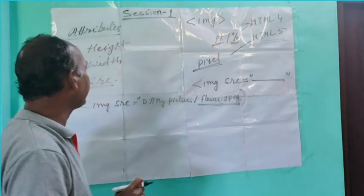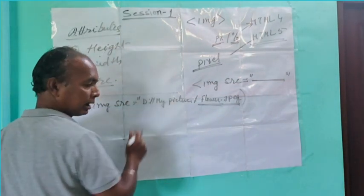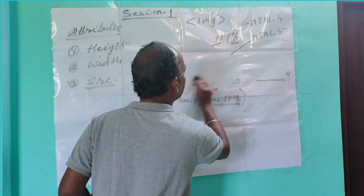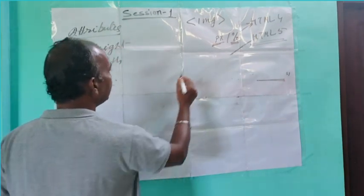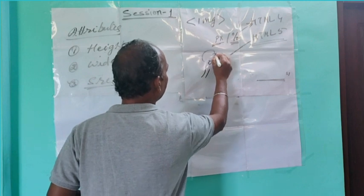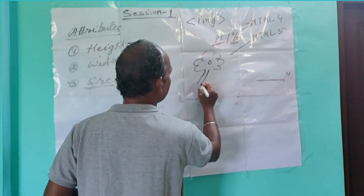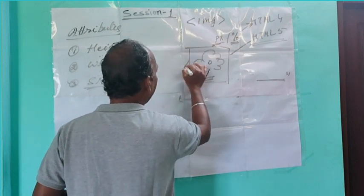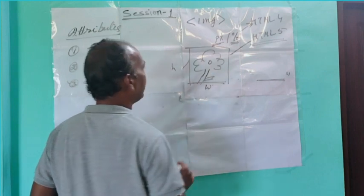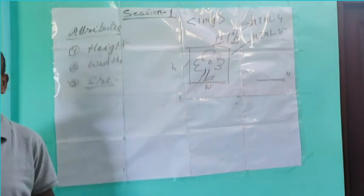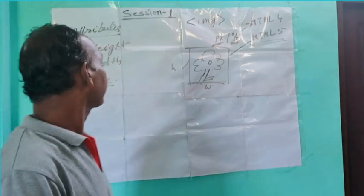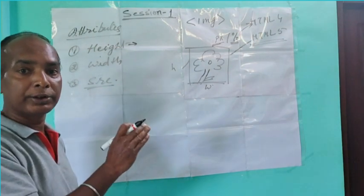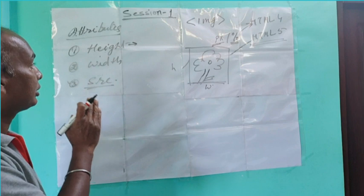The height attribute is used to specify the height of the image. The value of height is used in pixels. For example: img src="flower.jpeg" height="120px". Here the height of the image is 120 pixels.